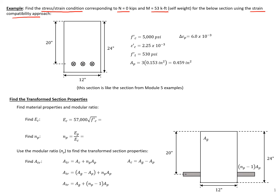We have the same rectangular section we've been working with in this class, so this is a continuation of our module five examples. We have three half-inch diameter strands and five KSI concrete. You can also see some of the other properties for our concrete: the strain at ultimate, the locked-in strain differential, and the tensile strength.